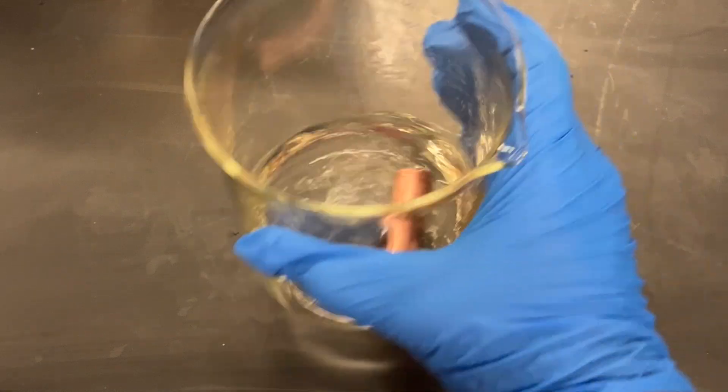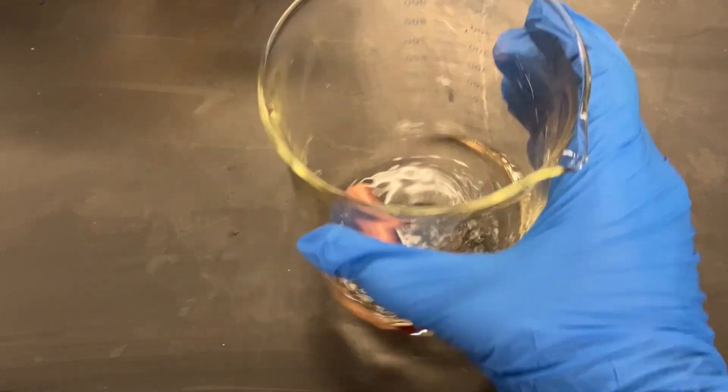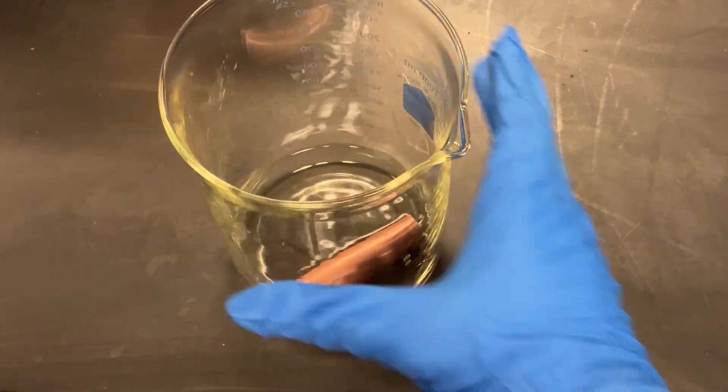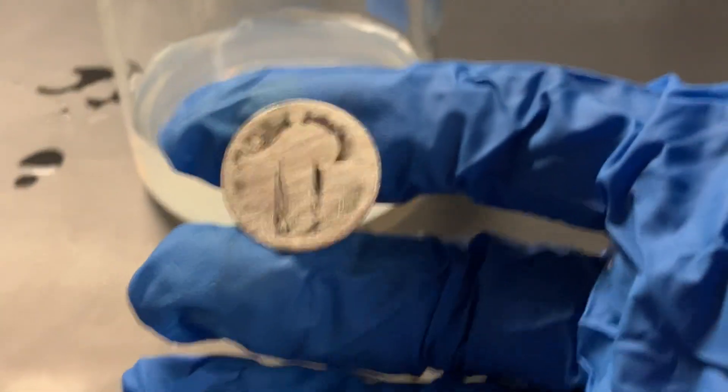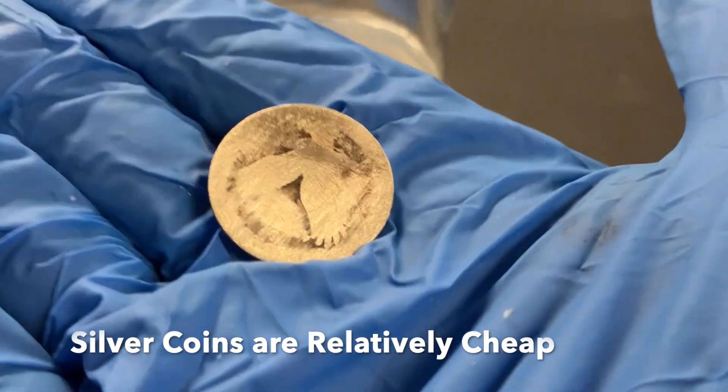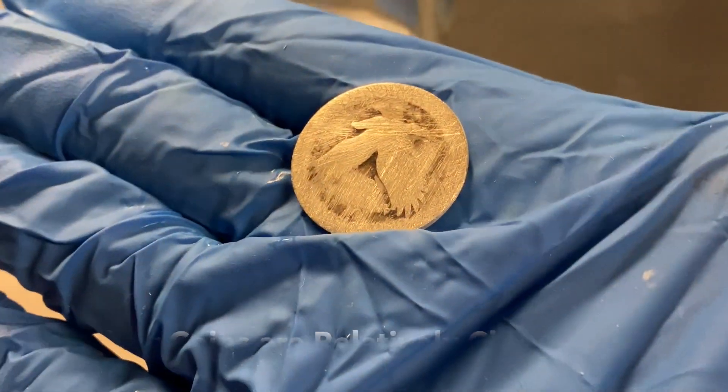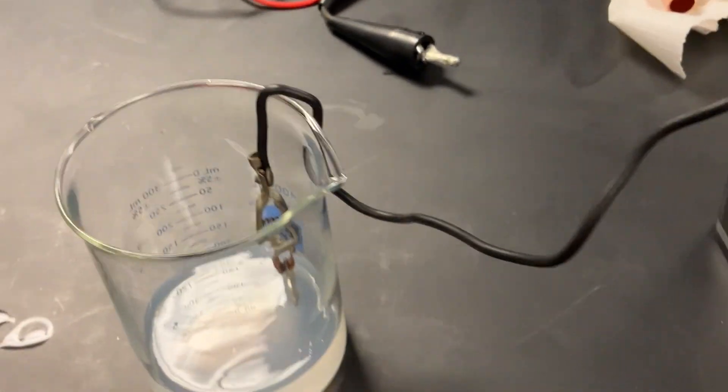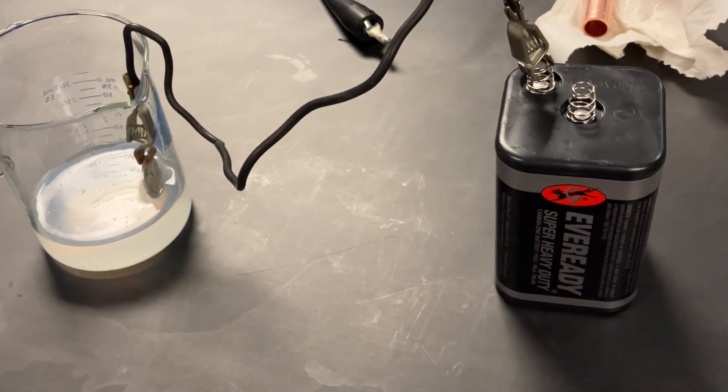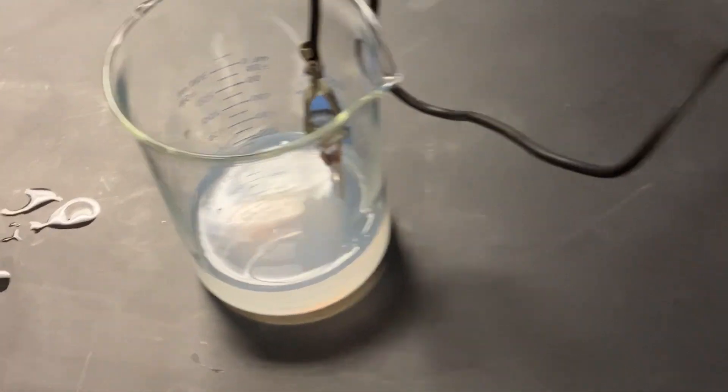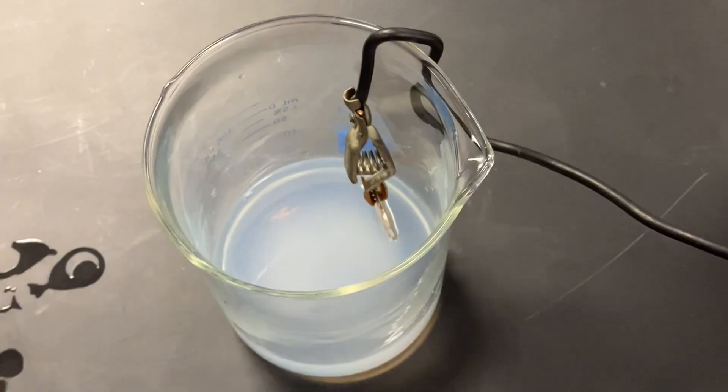Next, you're going to want a sacrificial piece of metal that is the same as the electrolyte in the solution, and you're going to want to connect that to the positive terminal of your power source. I used a lantern battery, but a DC power supply would be much better.